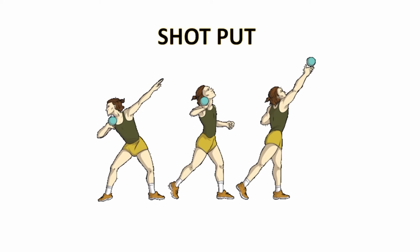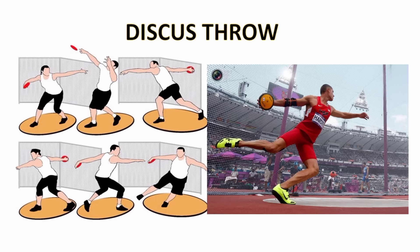In the shot put, the shot is made of cast iron, bronze, or brass with a lead center, weighing 16 pounds for men and 8.8 pounds for women. The shot is thrown from a circle 7 feet (2.135 meters) in diameter. The distance thrown is measured from the inside of the circumference of the circle to the nearest disturbance of the soil where the shot lands.